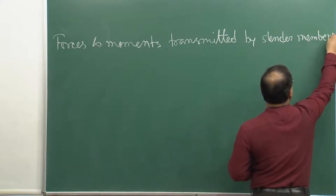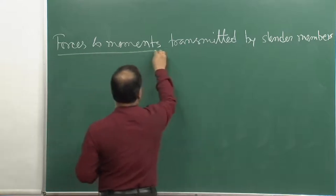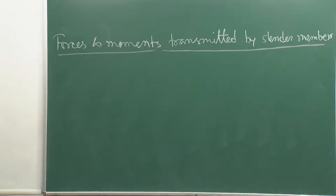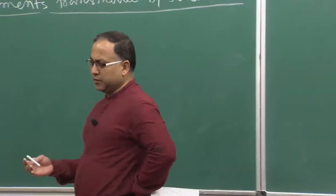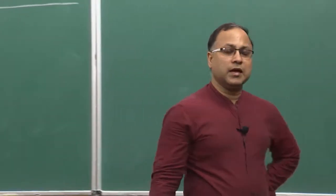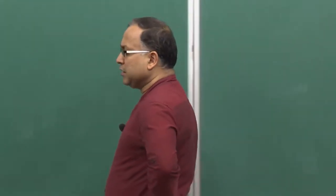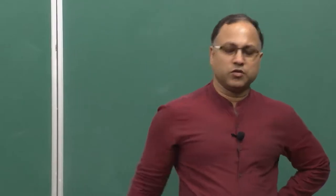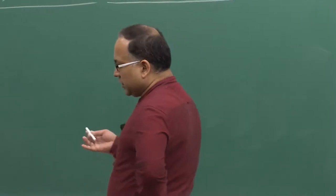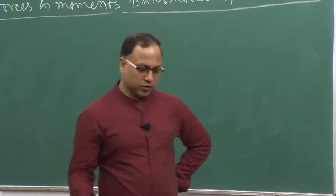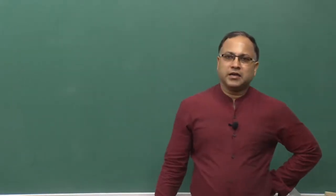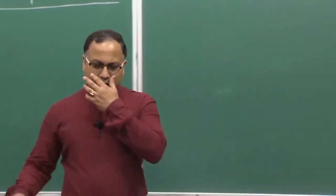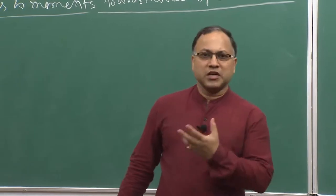The first thing to know is what a slender member is. A slender member is a member whose length is much greater than either of its cross-sectional dimensions — the length is much greater than the width or breadth. Generally, the length should be at least 5 times greater than the cross-sectional dimension.